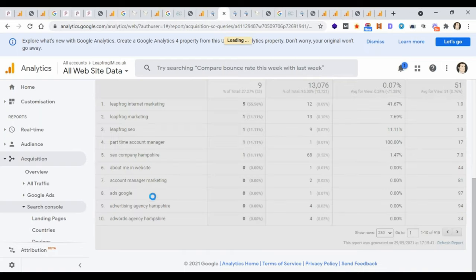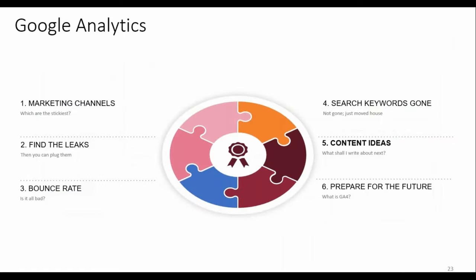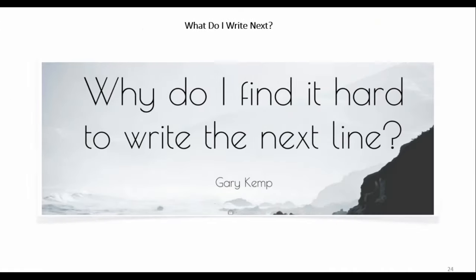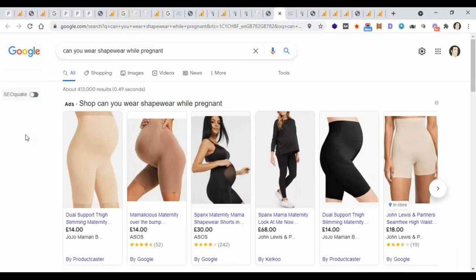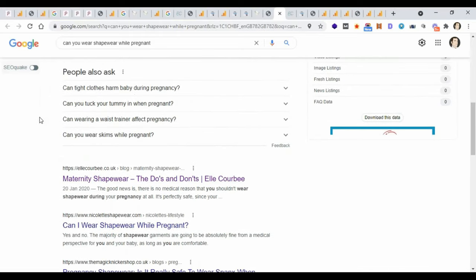Content — we're always looking for content ideas. You know the immortal words, 'why do I find it hard to write the next line?' You could make more data-driven decisions about what to write based on what people search for. Going back to that brand: we did keyword research and found lots of searches around shapewear and whether you should wear it while pregnant — it's slightly controversial. So 'can you wear shapewear while pregnant?' — we got a copywriter to write a piece around this, and it shows up on our blog: 'The Do's and Don'ts of Maternity Shapewear.'